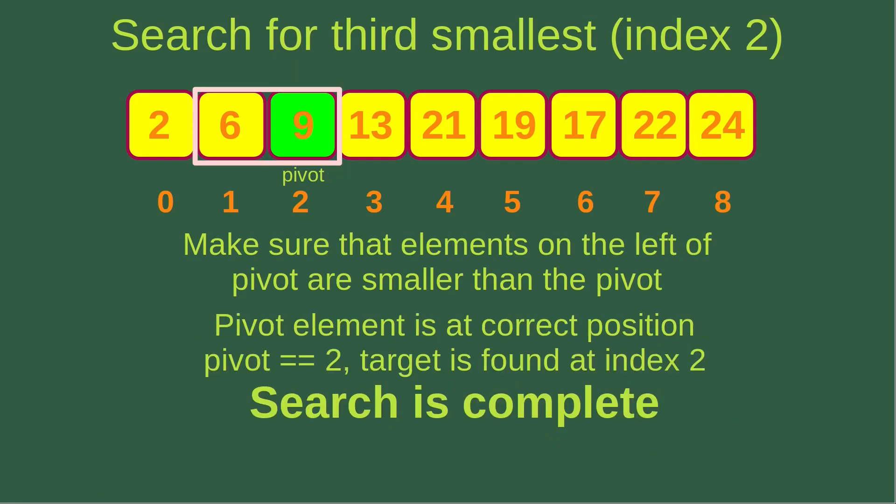The pivot element 9 is already at the correct position in the sorted array. Number 9 is the third smallest element, and the pivot index is now 2, which equals our target index 2. The target is found at index 2, and the search is complete.